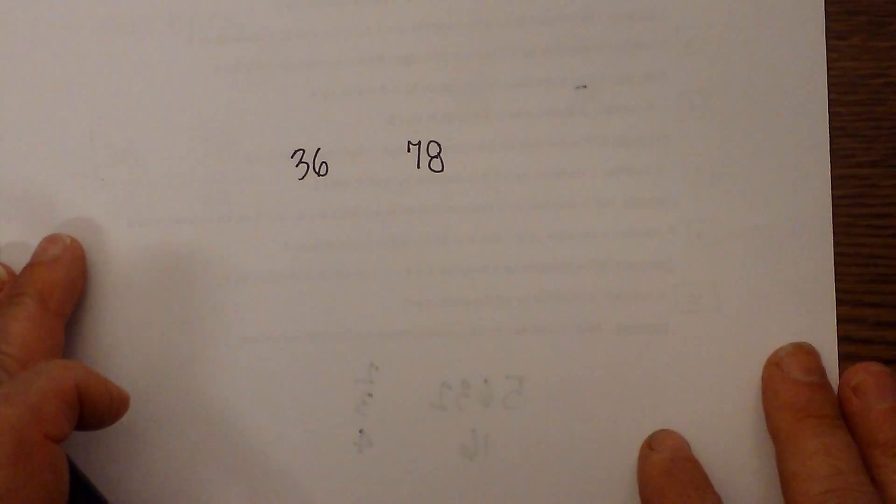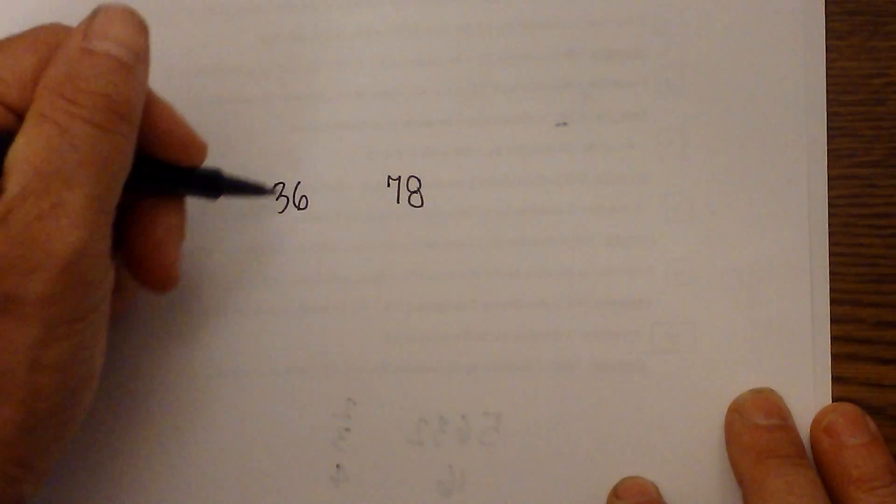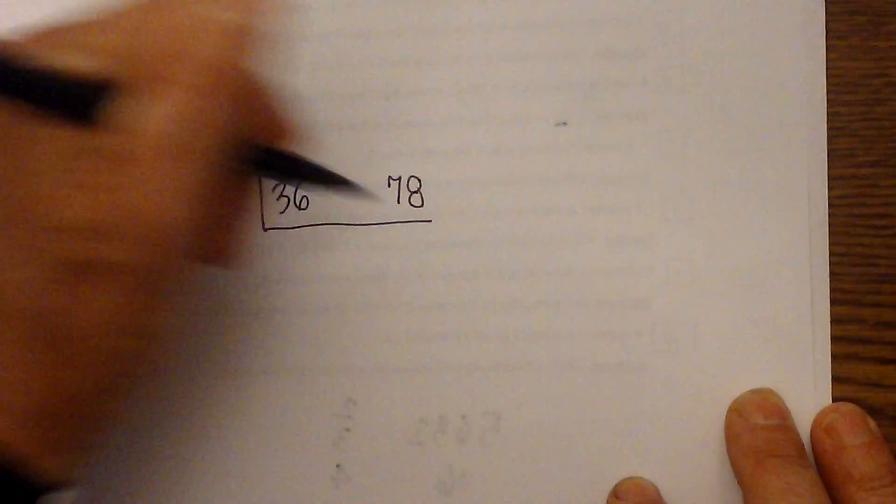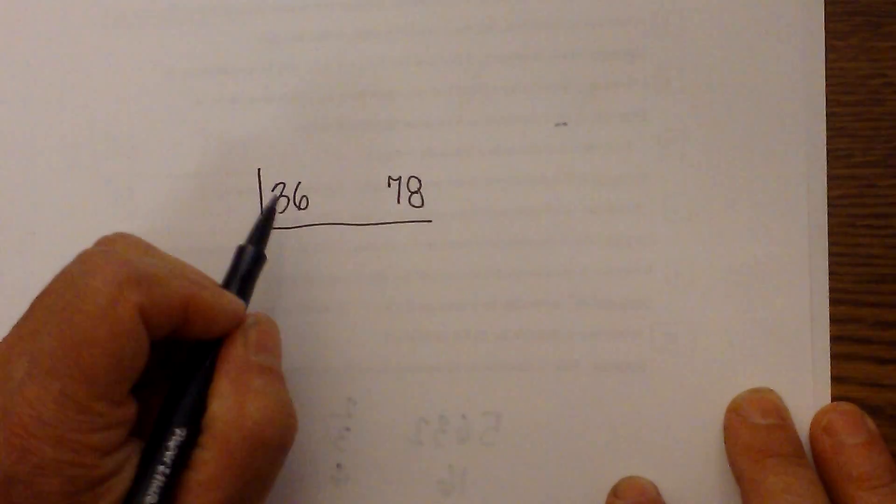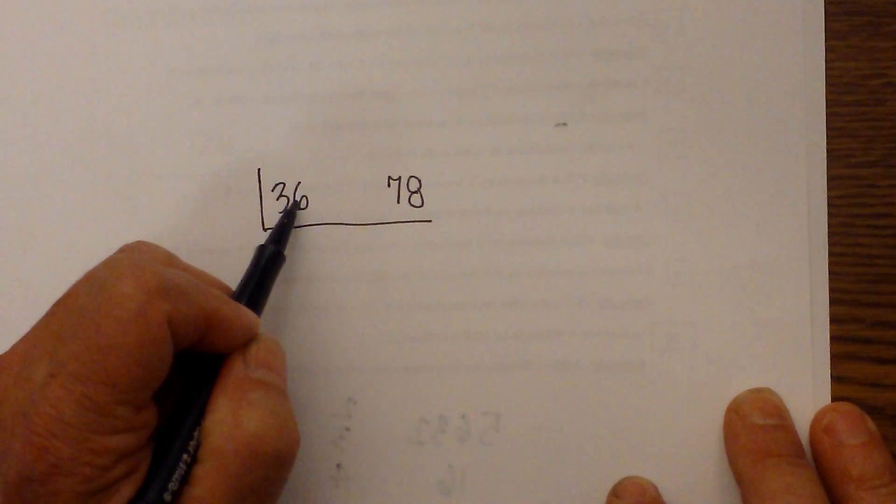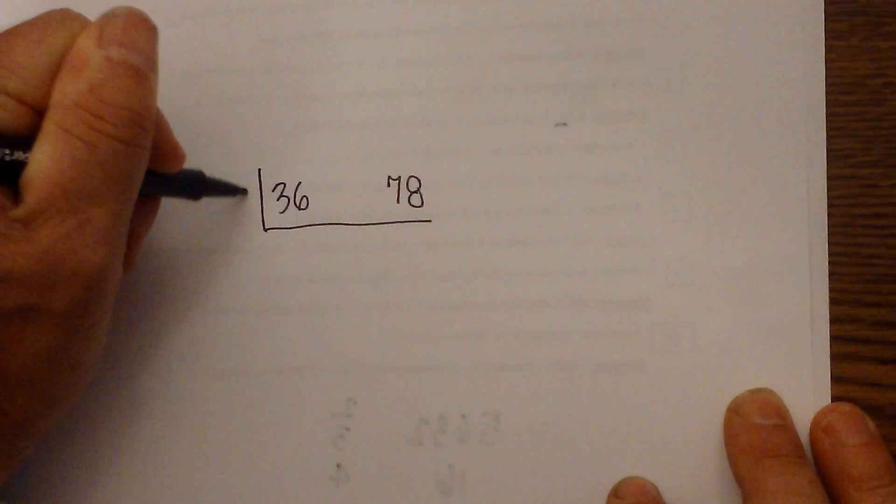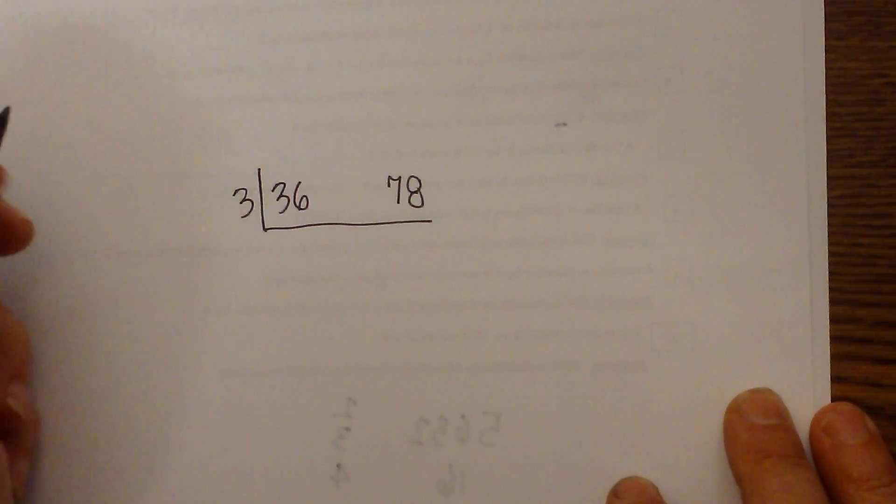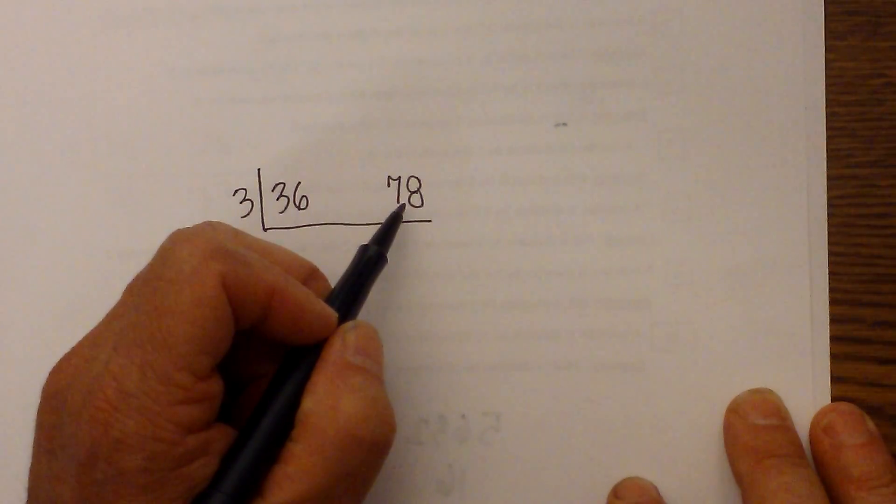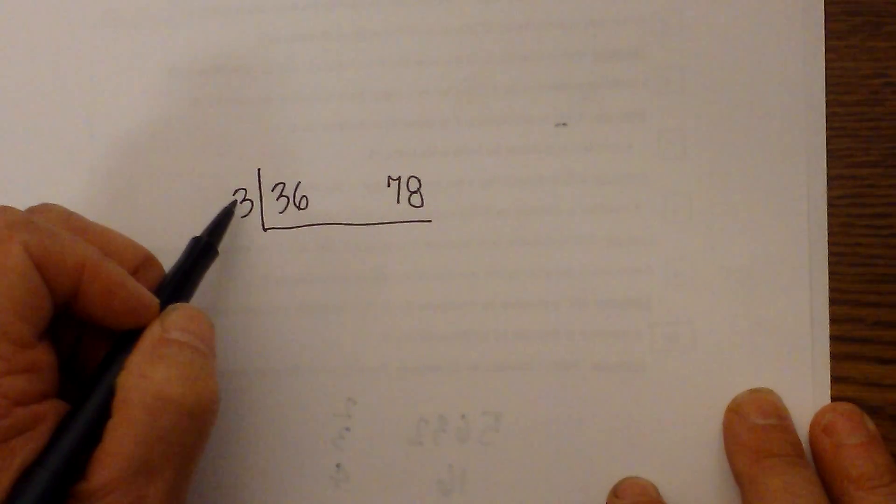Okay, let's work one final one using the ladder method. And so here we go. Okay, 36 and 78, I will draw a line underneath. Okay, I know that the rule is for 3's, if you add the two numbers together, 6 plus 3 is 9. And then this is 15, so I know that 3 will go into 36 and 78. Because if you total the numbers and it's divisible by 3, then it's divisible by 3.